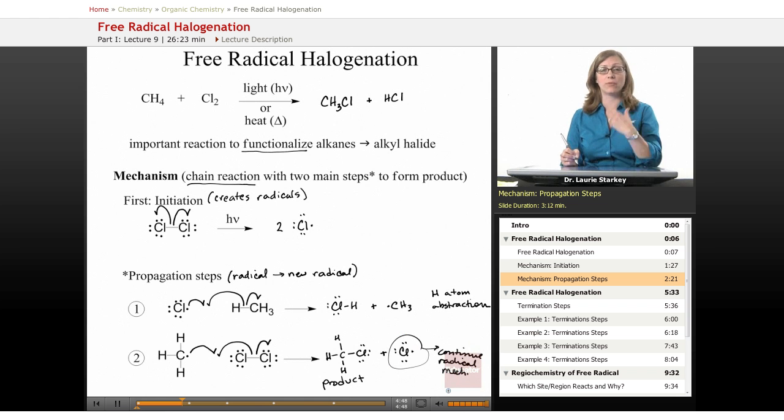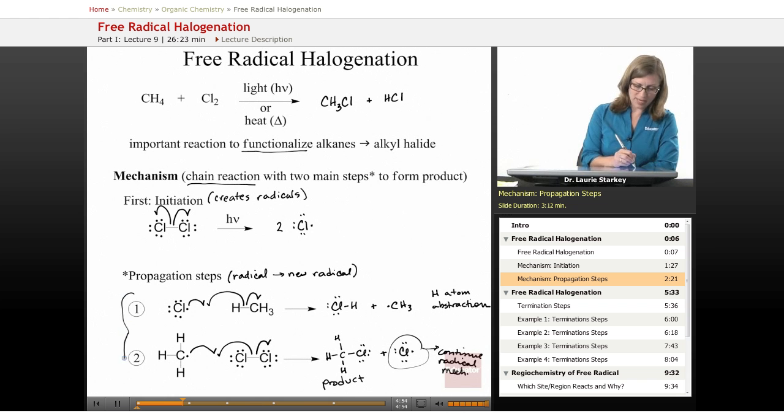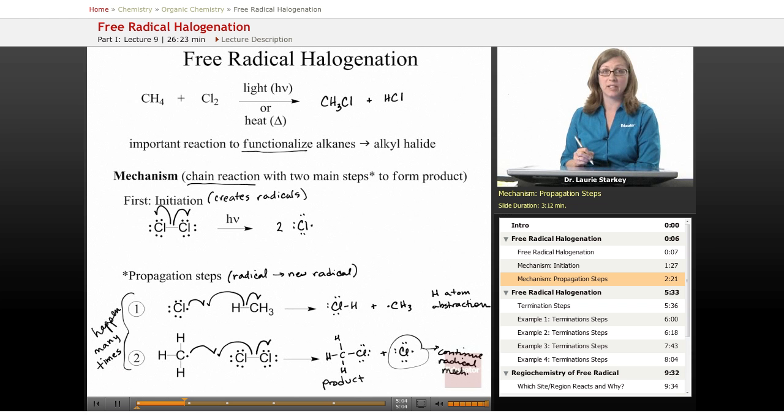So it's called a chain reaction because as soon as you form just one radical, these propagation steps will go on and on and on. These happen many times. And these are the two main steps I described in how to form your product is plucking off a hydrogen atom from the alkane. And then the resulting alkyl radical plucking off a chlorine from Cl2. We could describe this second step as a chlorine atom abstraction.